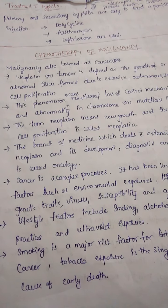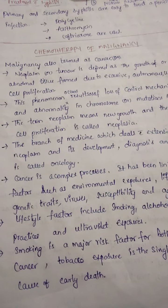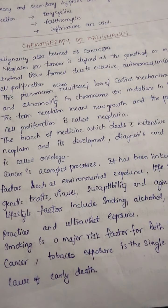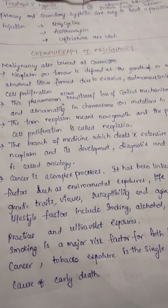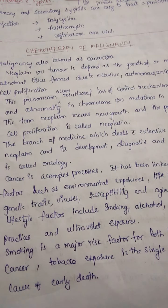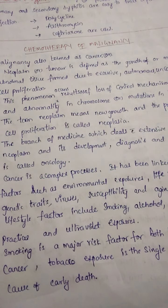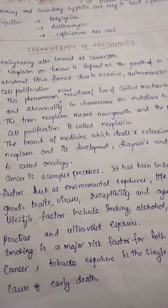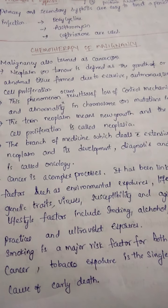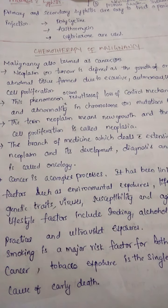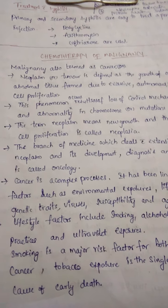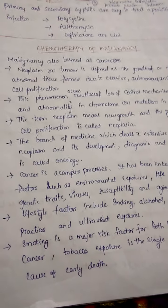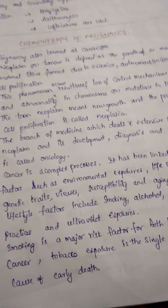In cancer, more cells develop in a particular tissue or organ due to excess cell proliferation. This is enhanced by lack of control mechanisms and abnormalities in chromosomes or mutations in DNA. These abnormalities are caused by factors including environmental exposures, lifestyle modifications, alcohol, diet, medical practices, and ultraviolet radiation.